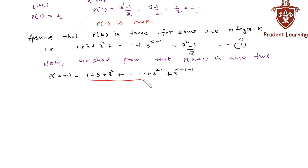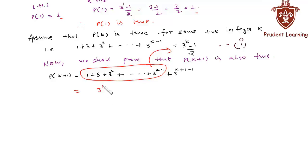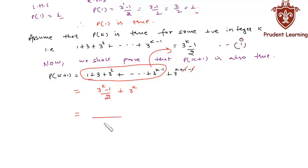Now if you observe carefully, the sum 1 + 3 + ... + 3^(k−1) equals (3^k − 1) / 2 by equation 1. Also, the exponent (k+1−1) simplifies to k, so we get (3^k − 1) / 2 + 3^k. We are left with (3^k − 1) / 2 + 3^k.